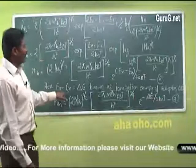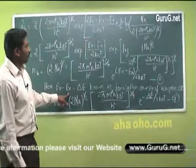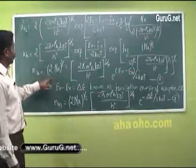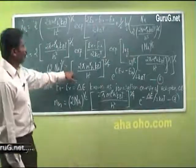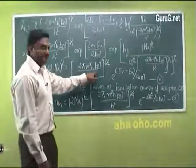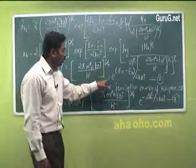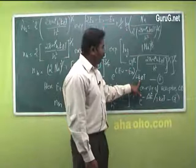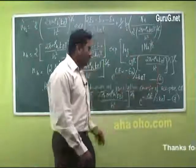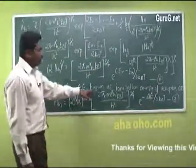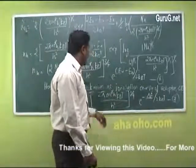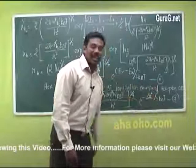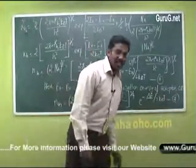Here EV minus EA. This equation is again simplified as 2A into NA^(1/2) (2 pi M* H KBT / H²)^(3/2) e^[(EV minus EA) / 2KBT]. This is equation number 6. From this equation, EV minus EA is known as the ionization energy for the acceptor energy level and is given as ΔE. This is the minimum energy required for a hole to move from the valence band to the acceptor energy level.